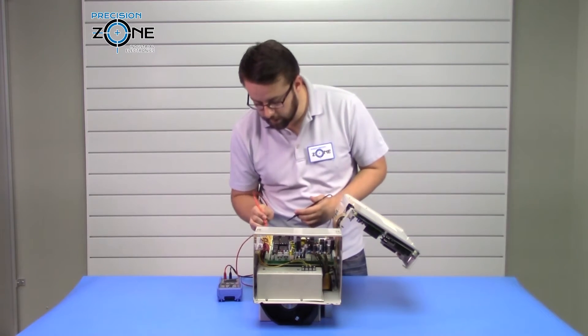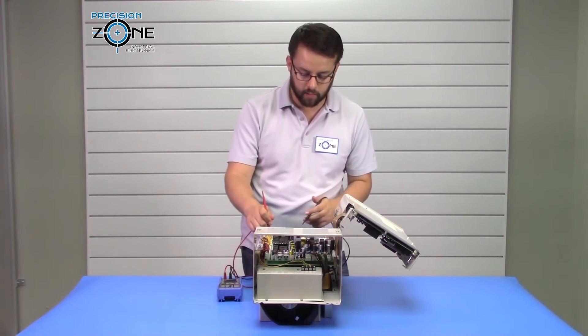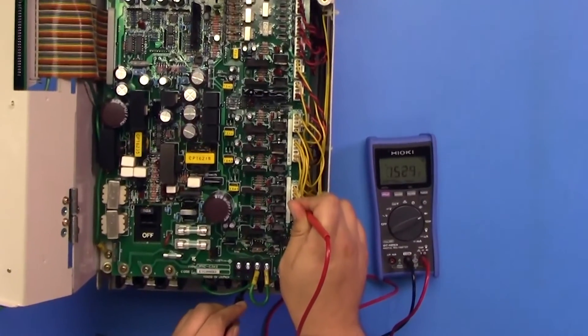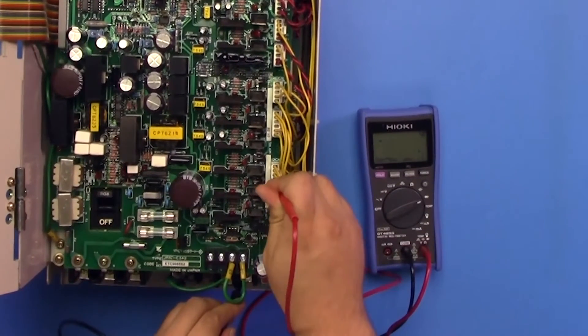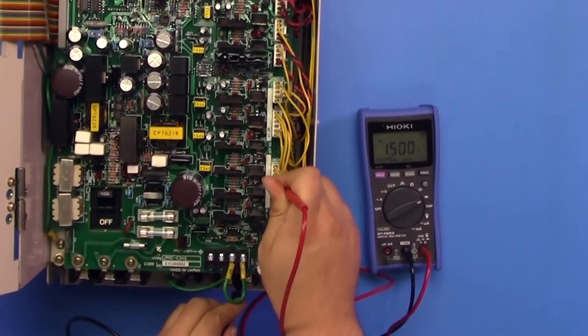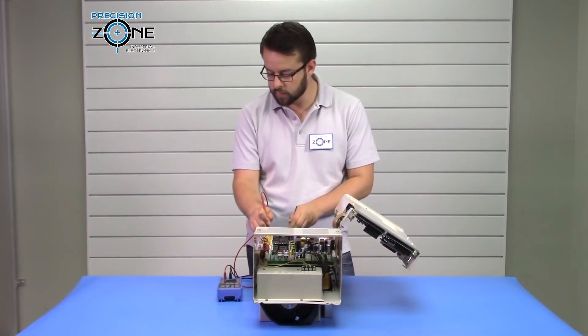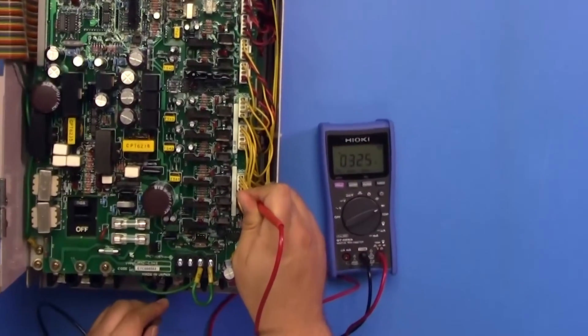Connect that to the negative pin over here, which is connected to the negative side of the DC bus. We're going to be able to check UVW, and that should be about 0.32 volts on each leg from UVW for your outputs.